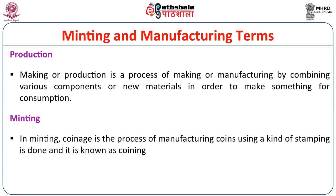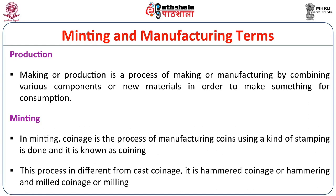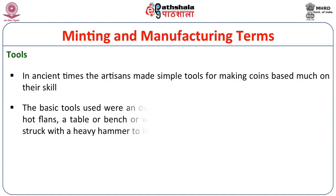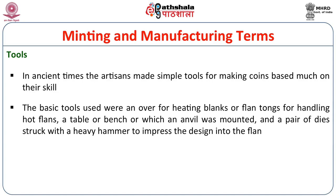Minting or coinage is the process of manufacturing coins using stamping, known as coining. This process is different from cast coinage. It involves hammered coinage or milling. In ancient times, the artisans made simple tools for making coins based much on their skill rather than on machinery. The basic tools used included heating the blanks, using tongs for handling hot planchets, a table or bench on which an anvil was mounted, and a pair of dies struck with a heavy hammer to impress the design into the planchet.